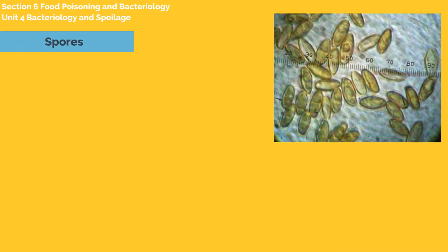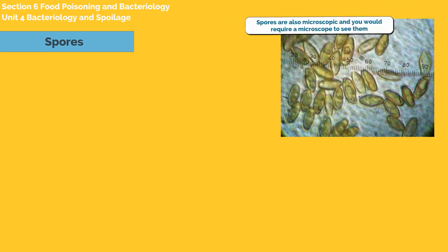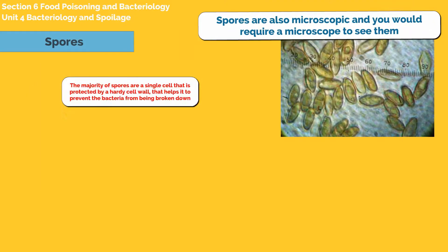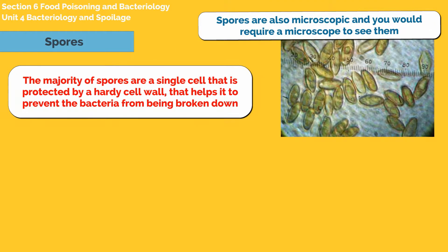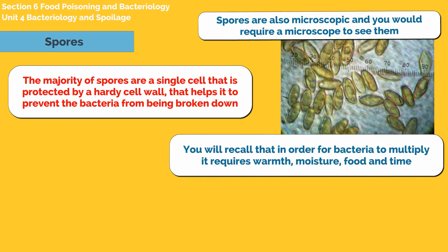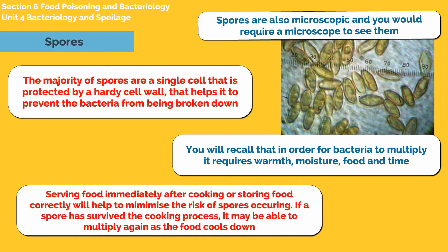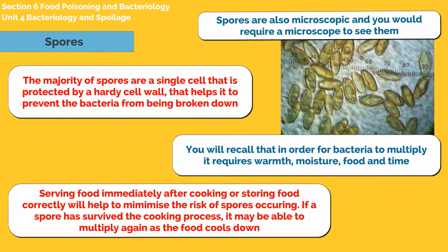Spores are also microscopic and you would require a microscope to see them. The majority of spores are a single cell that is protected by a hardy cell wall that helps prevent the bacteria from being broken down. You will recall that in order for bacteria to multiply, it requires warmth, moisture, food and time.